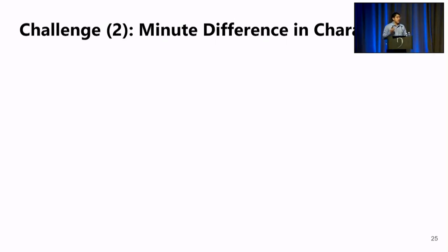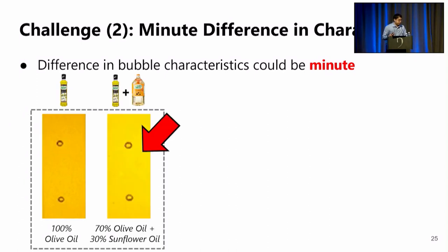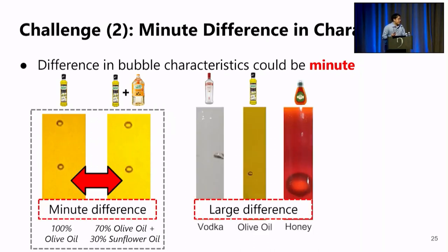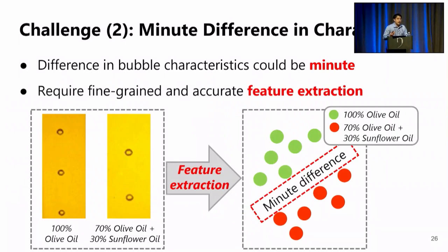We have talked about the challenge in measuring bubble characteristics in each test. Now let's move on to the second challenge: differentiating authentic and adulterated liquid content. The challenge is that the difference in bubble characteristics could be extremely minute due to minute differences in the liquid properties. For example, we have 100% olive oil versus 70% olive oil adulterated with 30% sunflower oil, and we can actually hardly see the difference. This minute difference requires fine-grained and accurate feature extraction to further distinguish the adulterated and authentic liquid content.